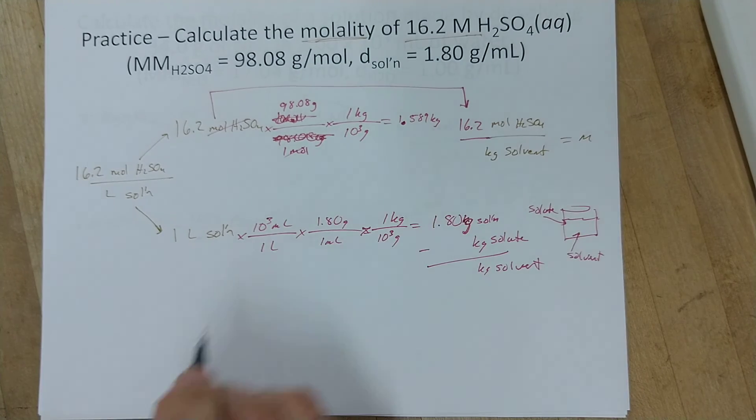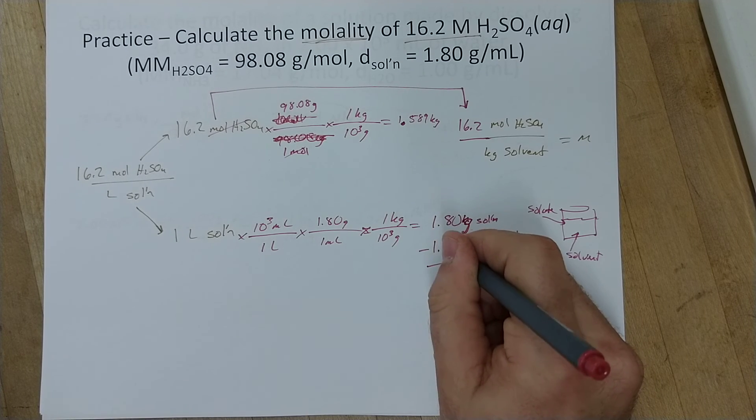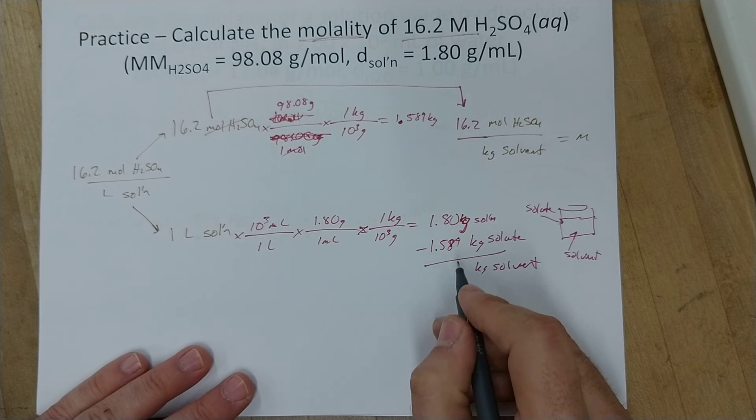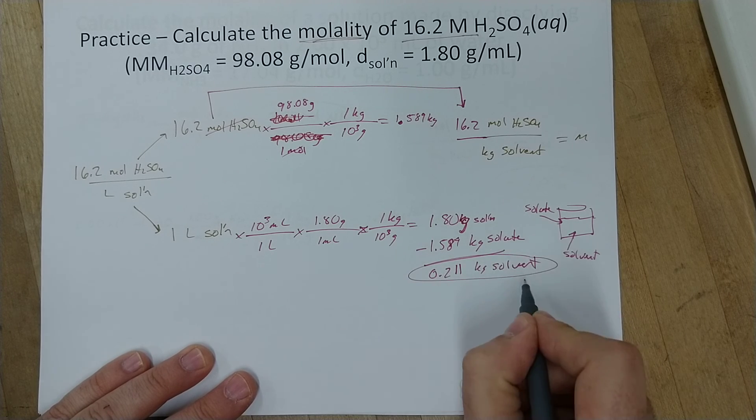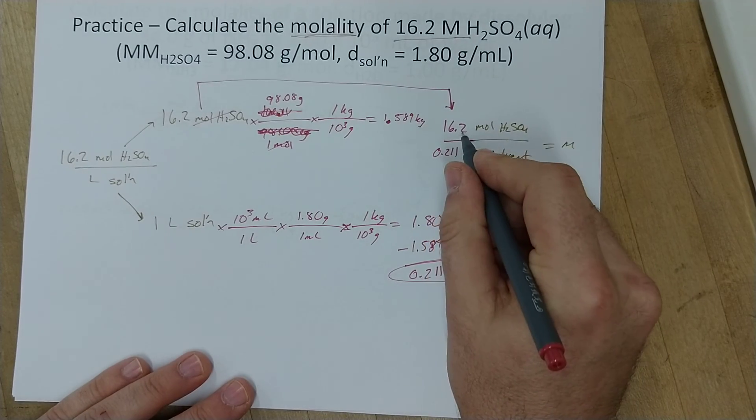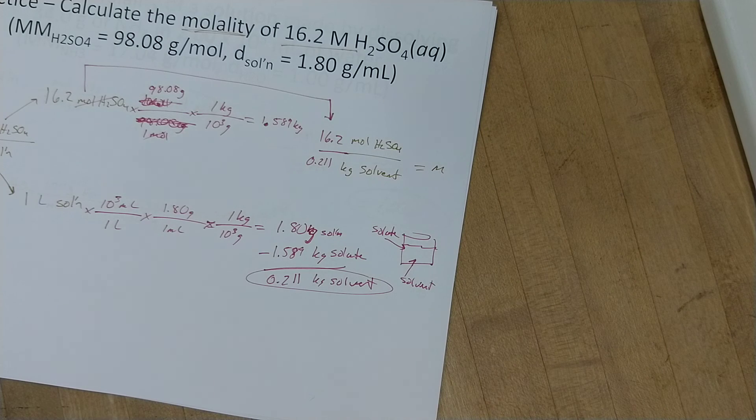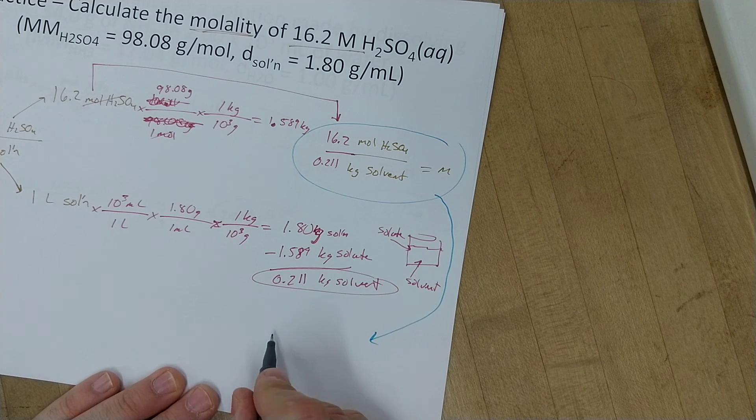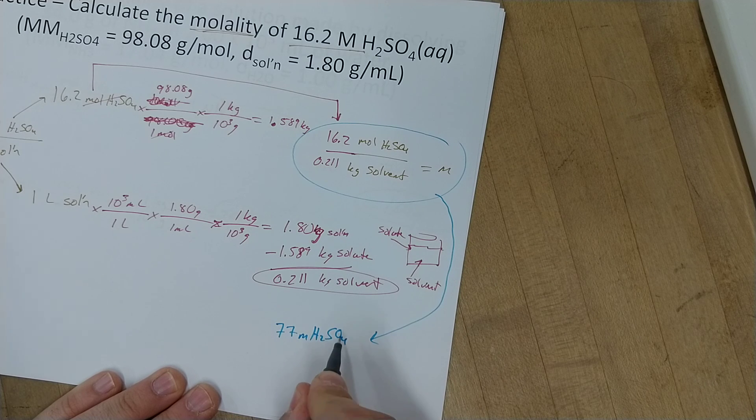I'm sorry, 1.589 kilograms. Would have been 1,589 grams. So I'll come down here and subtract 1.589 kilograms, and I'm left with just 0.211 kilograms of the solvent. And that's what I bring up here to plug in. 0.211 kilograms of solvent. I can now divide 16.2 divided by 0.211, and I'll get, as my answer, I'll get my molality is 77 molality H2SO4 in that solution.